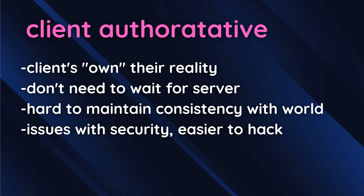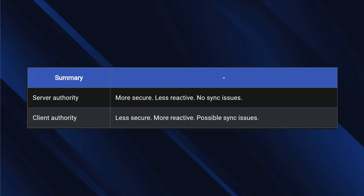With client authority, the client just tells the server 'I moved — update the other clients.' The problem is it's harder to maintain consistency and there are security issues, since clients can potentially hack the game by making themselves faster or easier to shoot. There are fixes for this, such as client-side prediction, which let you maintain server authority while keeping the client from experiencing lag. In summary: server authority is more secure but less reactive with no synchronization issues, while client authority feels more reactive but can have synchronization and security problems.